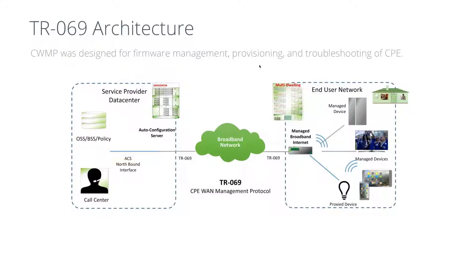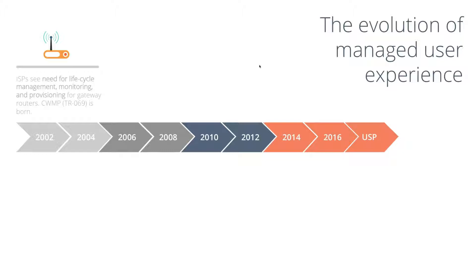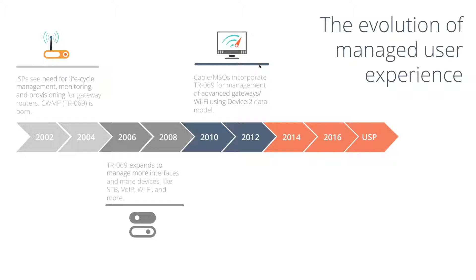TR-69's architecture is designed for customer equipment to connect to a single auto-configuration server, often integrated into OSS and BSS systems. Underlying TR-69 is a data model — a description of objects and parameters representing functions on end devices like network interfaces, applications, and statistics. Over time TR-69 expanded to cover set-top boxes, VoIP devices, Wi-Fi access points, and more. Around 2010, the cable industry began using TR-69, specifically the Device 2 data model, to manage advanced gateways and Wi-Fi capabilities.